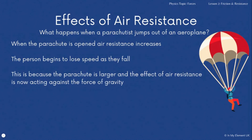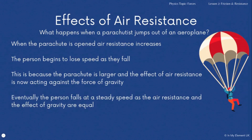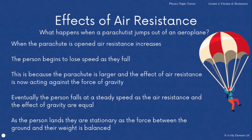Because the parachute is much larger, air resistance now acts against the force of gravity, which slows them. Eventually the person falls at a steady speed — air resistance and the effects of gravity are equal. This is the point often seen in recordings where they're enjoying sailing through the air with the parachute open. Finally, as the person lands they become stationary because the force from the ground and their weight are balanced.